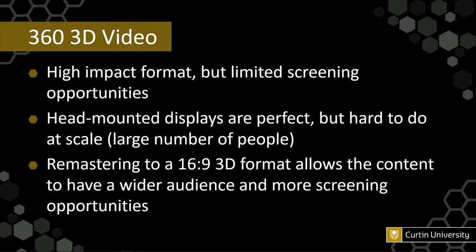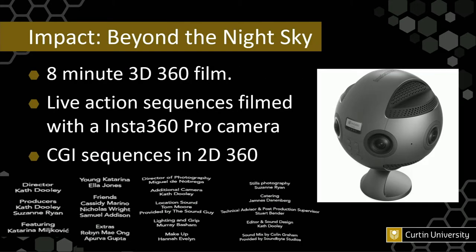Let's look at two examples of how that's been done — they've done it very differently, so it's an interesting two-case comparison. The first is a short film called Impact Beyond the Night Sky, directed and produced by Kath Dooley along with her co-producer Suzanne Ryan. It's a film produced at Curtin University, and the subject is a planetary scientist named Katarina Milkovic. It's roughly eight minutes in length, and the live-action sequences have been filmed with an Insta360 Pro camera.